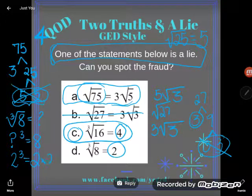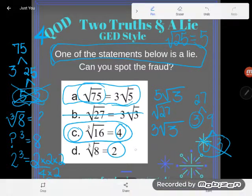Well, 2 cubed means the same as 2 times 2 times 2. 2 times 2 is 4, and if I multiply that by 2 again, look at that, I do get 8. That was a true statement. That was not one of the lies.